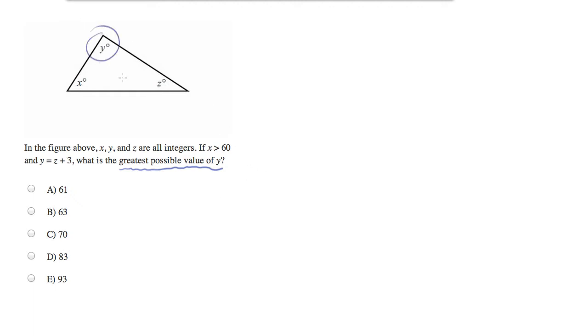I'm going to circle y here so we know what we're trying to keep track of. Now, we have three values in this triangle, and we want to simplify. We're told that y is equal to z plus 3. It's tempting to plug in for y at this point. But since we're trying to solve for y, I'd rather not do that. So I'm actually going to modify this equation a little bit.